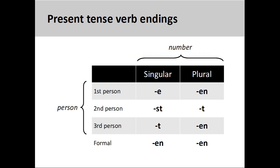In German, present tense verb endings are determined both by the number of the subject they modify, singular or plural, and the person of the subject: first, second, or third person.